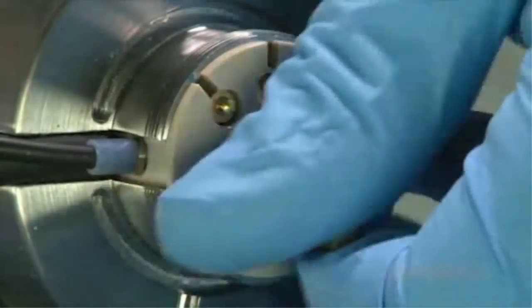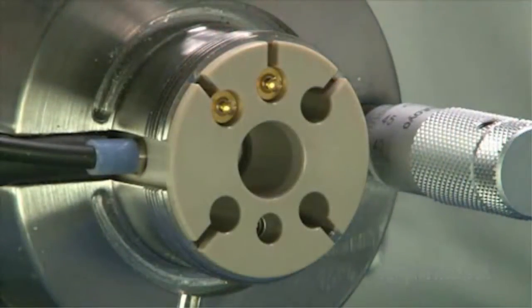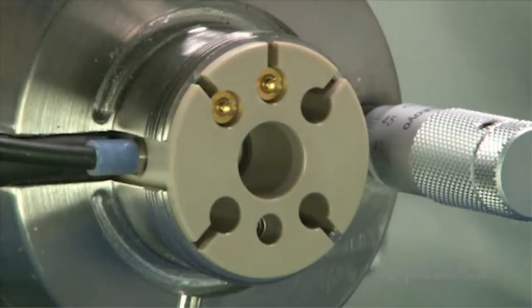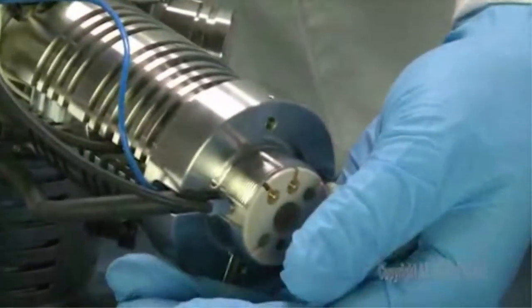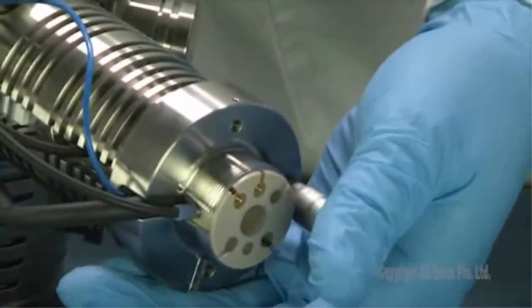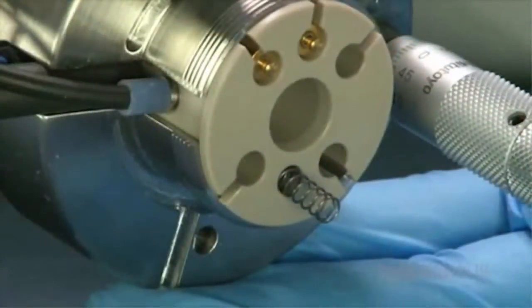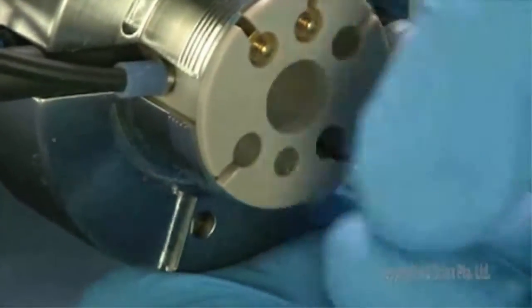Twist the thumbscrew counterclockwise until the thumbscrew is released from the Corona Discharge Needle. Be careful of the spring which is located under the thumbscrew. Tip the source so that the spring slides out of the source housing.